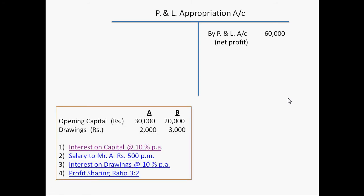Let's take one example. Suppose there are two partners A and B. Their opening capitals are 30,000 and 20,000 respectively. Their drawings are 2,000 and 3,000 respectively. These are the provisions given in the partnership deed, and according to these provisions we will apportion this 60,000 between A and B.